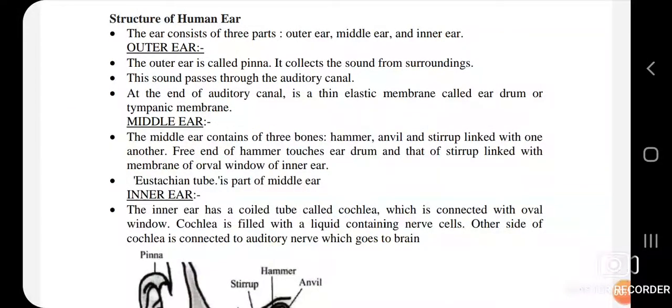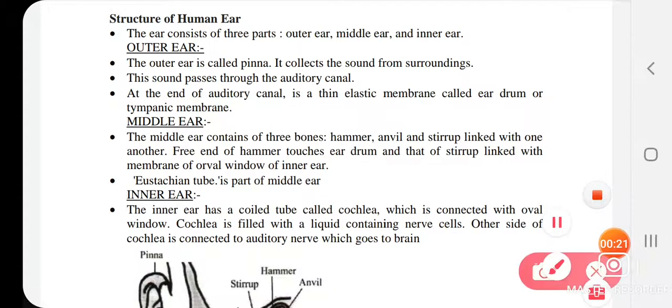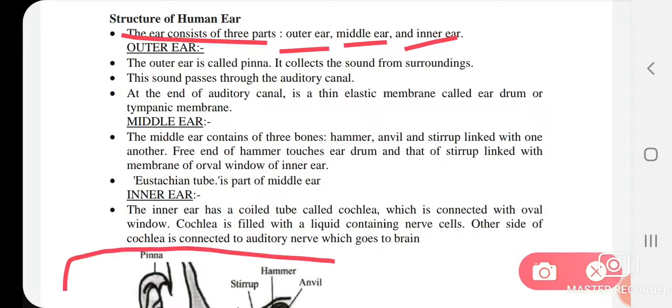You will get all the parts from there. Our whole chapter is complete, just the structure of human ear is pending, which we will do today. So the ear consists of three parts: outer ear, middle ear, and inner ear. Now let's discuss these three in detail.